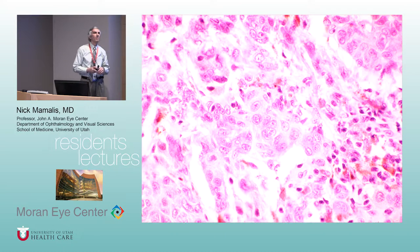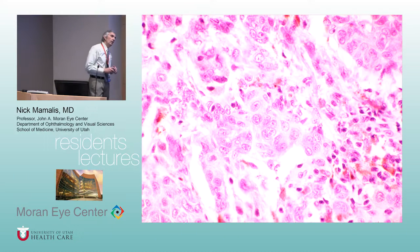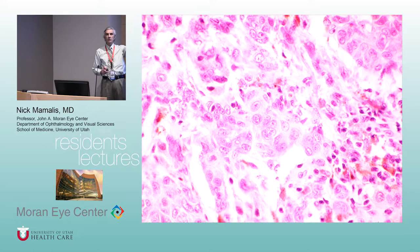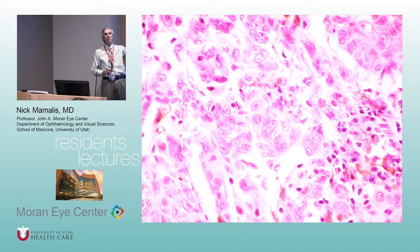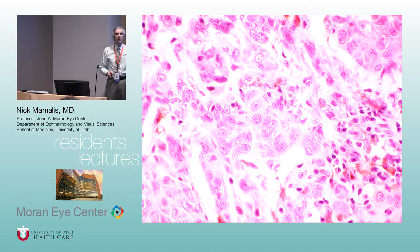Regarding the differentiation of a nevus as it ages: it goes from junctional — when melanocytes come from the neural crest to the junction first — to compound, when it drops into the dermis or subepithelial space. Then it becomes a dermal nevus, losing the junctional connection. Once you've lost that junctional component, you lose the malignant capabilities.